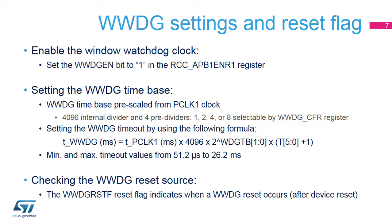To enable the window watchdog clock, set the WWDG_EN bit in the RCC APB1 ENR1 register. The window watchdog time base is pre-scaled from PCLK1 APB1, whose maximum frequency can go up to 80 MHz. This clock frequency is first pre-divided by 4096, and the window watchdog pre-scaler can divide it again by 1, 2, 4, or 8, as defined in the WWDG_CFR register. The formula shown in this slide lets you determine the watchdog timeout, which is derived from the PCLK1 period, the WDG_TB pre-scaler, and the selected watchdog counter reload value.